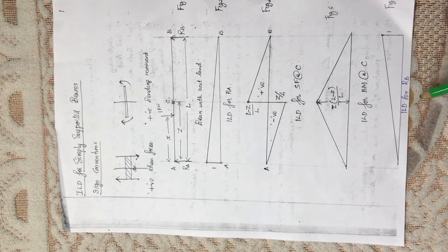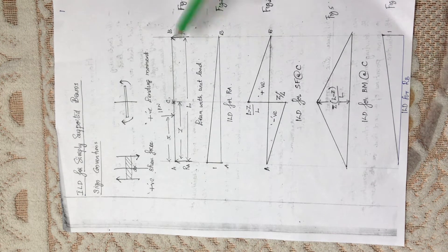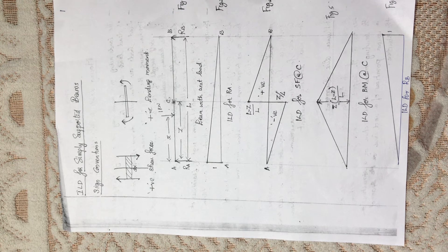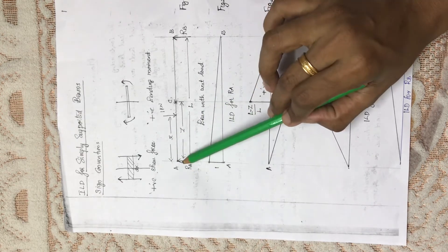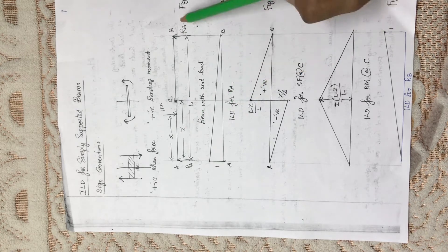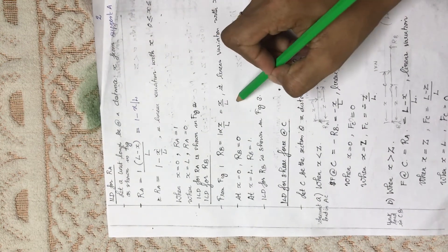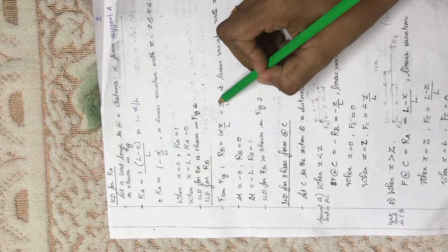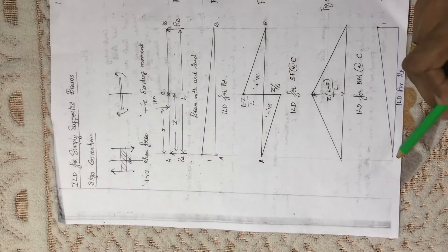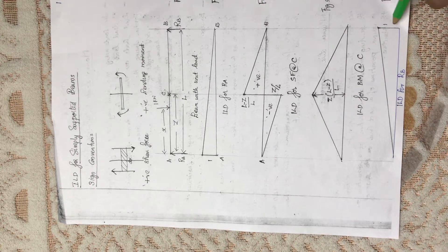For the influence line diagram of RB, we have RB = H/L. At point A where H = 0, RB = 0, and at point B where H = L, RB = 1. So the influence line for RB is a straight line increasing from 0 at A to 1 at B.